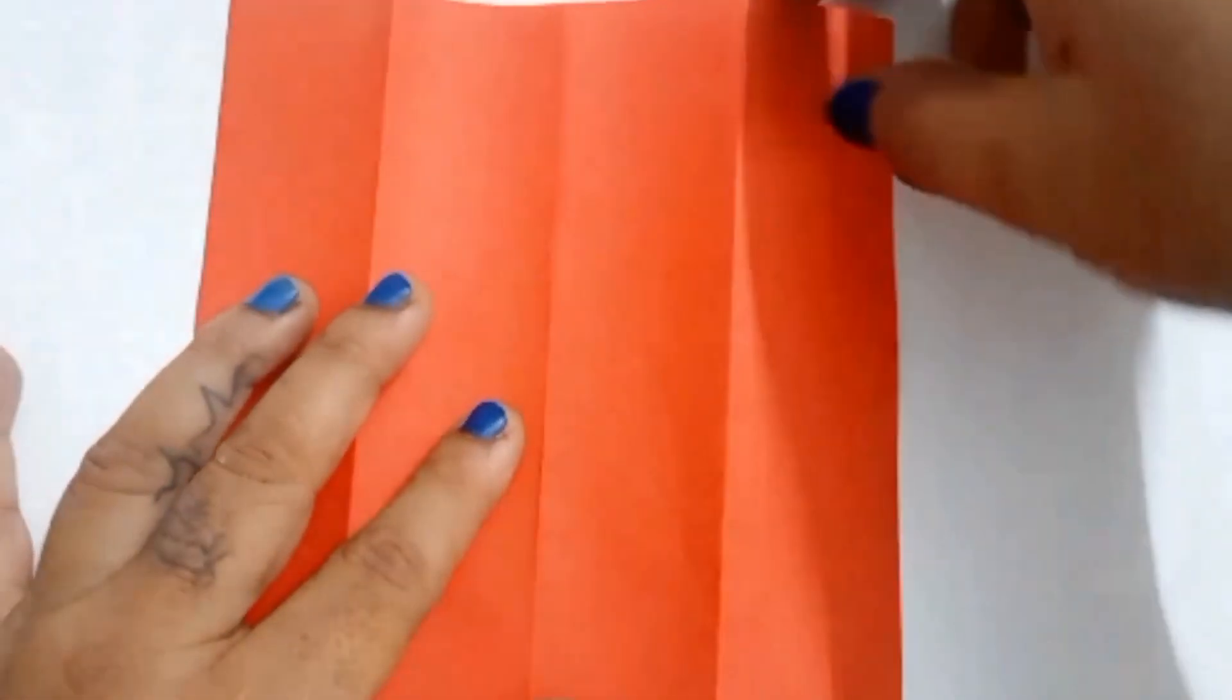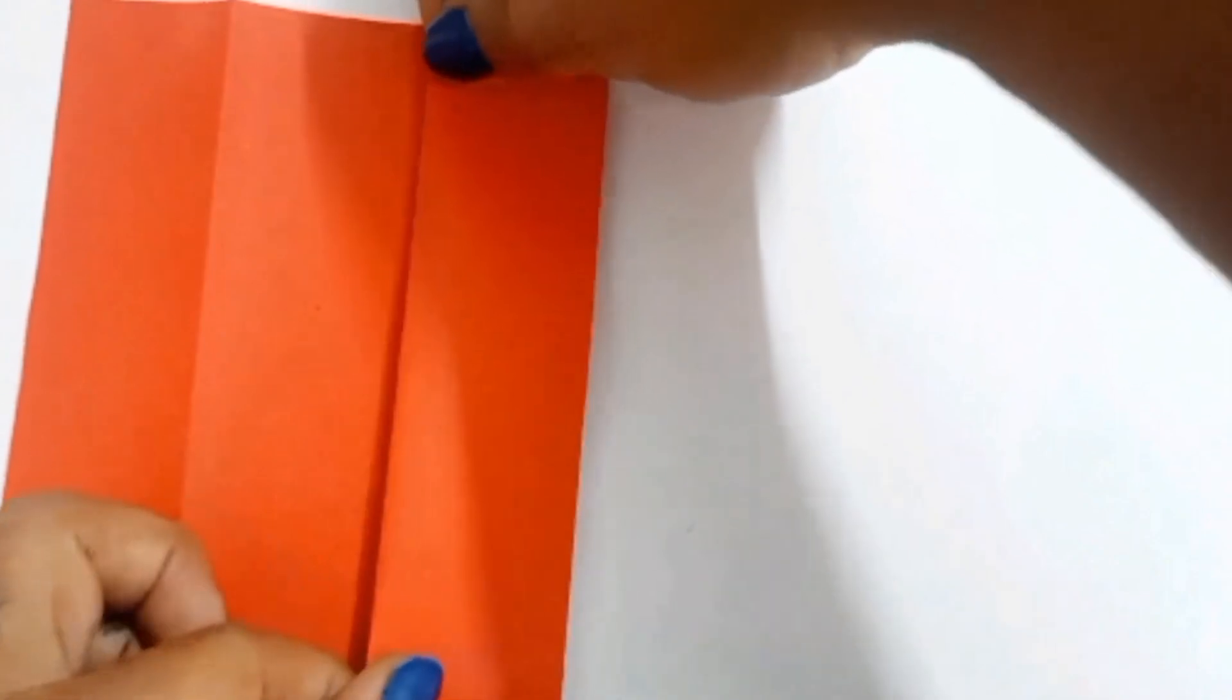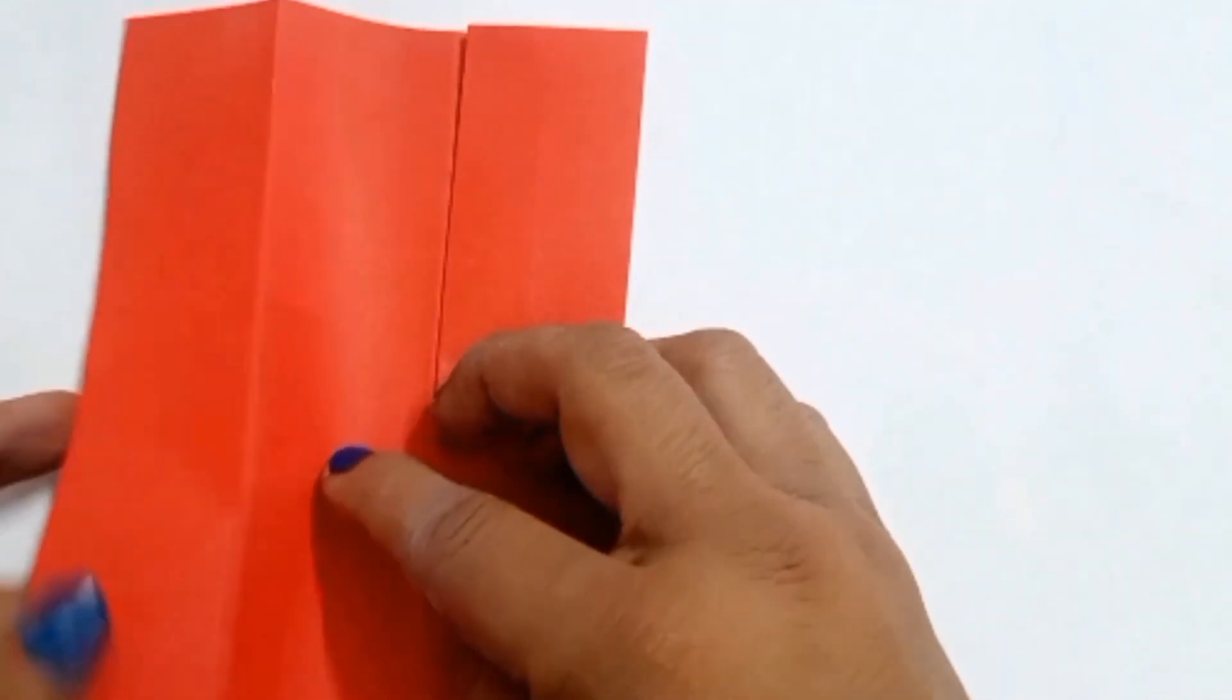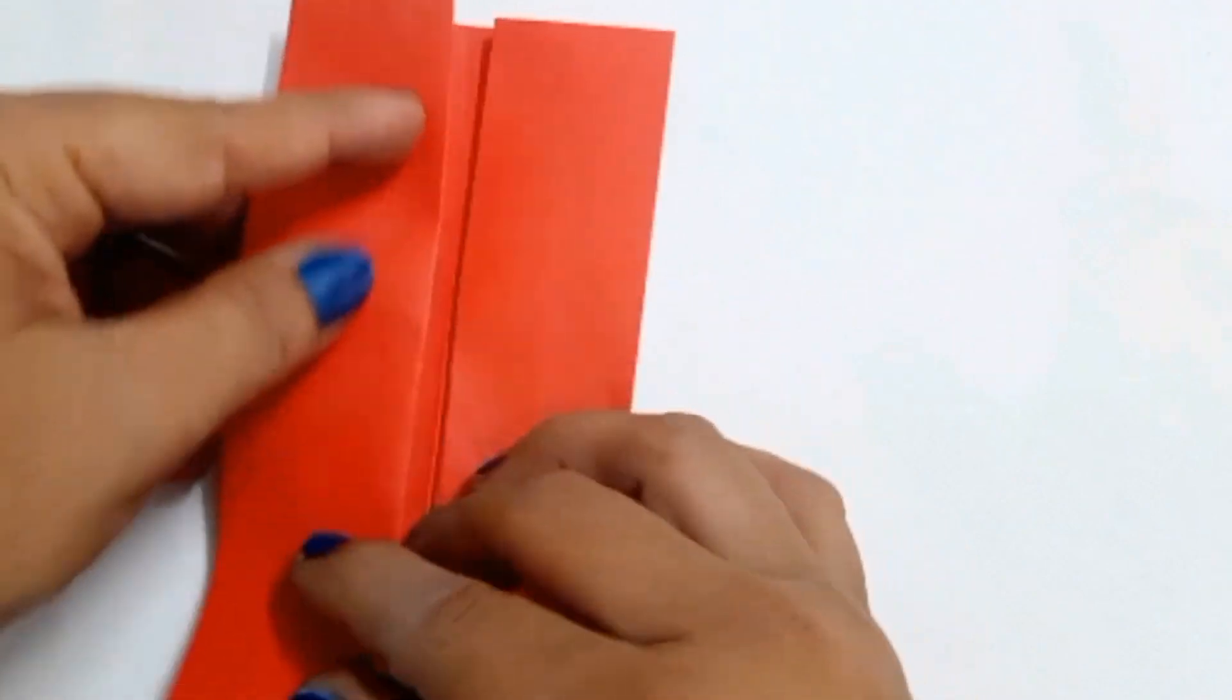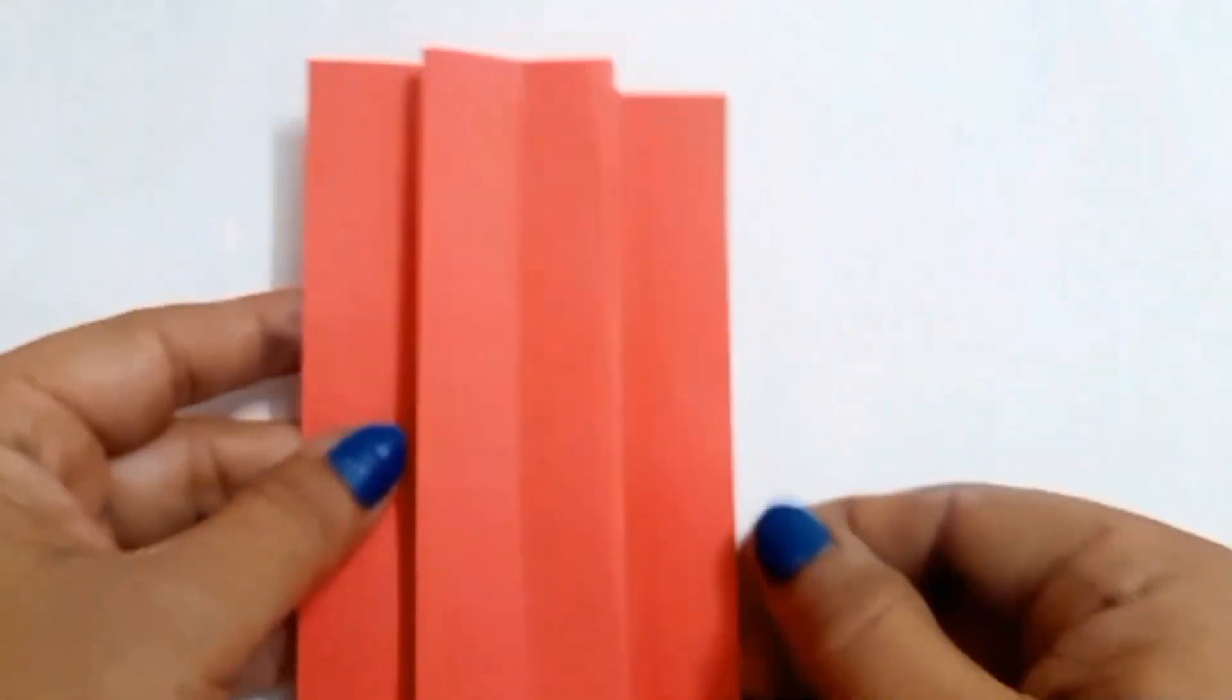Turn over. Again fold it in the direction of the crease to the middle side like this. Do the same with the other side. It will look like this.